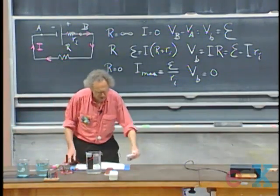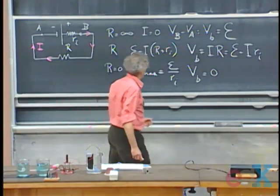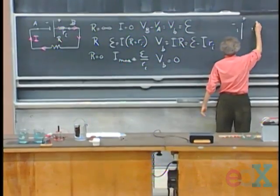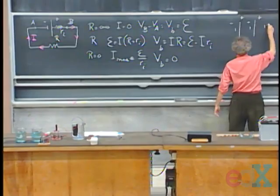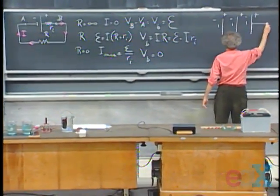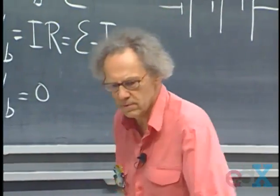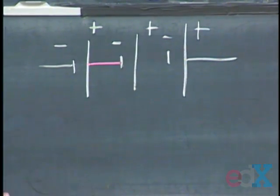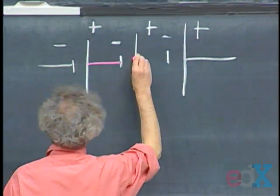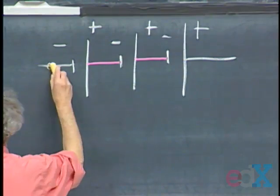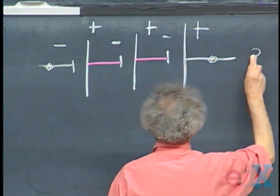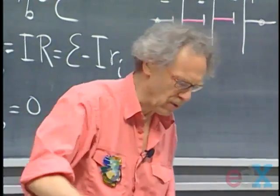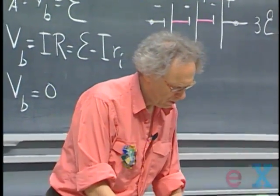You can put batteries in series and thereby get a higher potential difference. Here I have three independent batteries, each with an EMF E, with negative and positive sides. I connect the positive side of one with the negative side of the other, and now the potential difference between the outer two points is 3E — in open circuit, if I don't draw any current. If I draw a current, I have to deal again with the internal resistance.